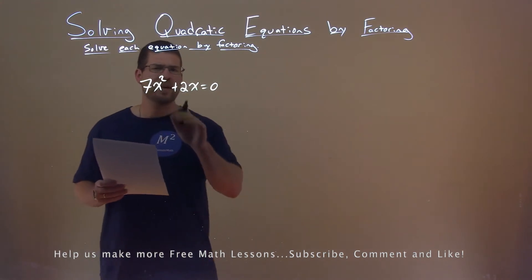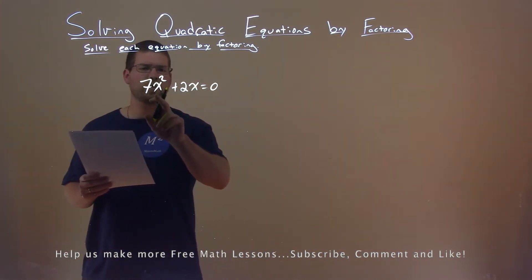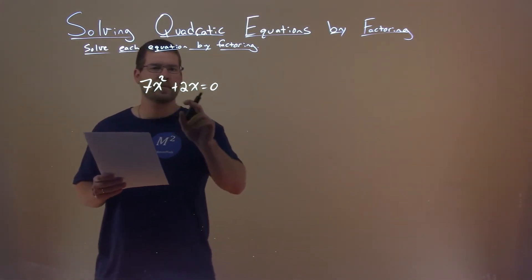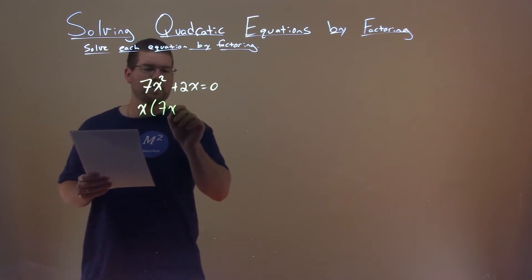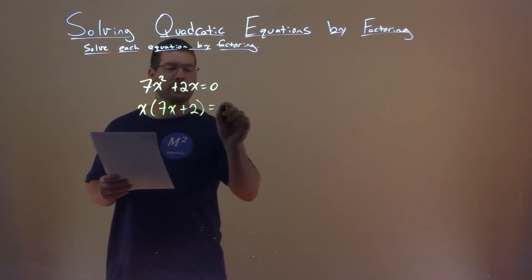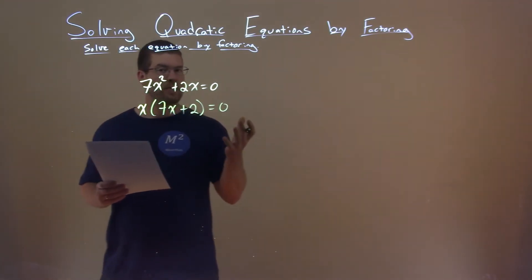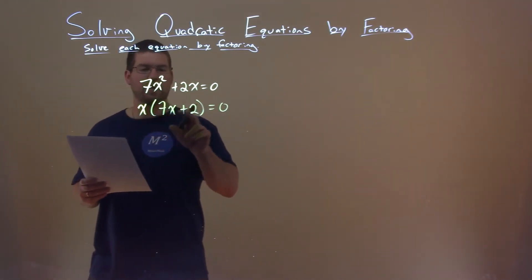Well, actually, this is a fairly easy problem from the beginning. Notice that there's an x in these two parts. So, if I pull out an x, I'm left with 7x plus 2 equals 0, and this is actually factored. It's x times 7x plus 2.